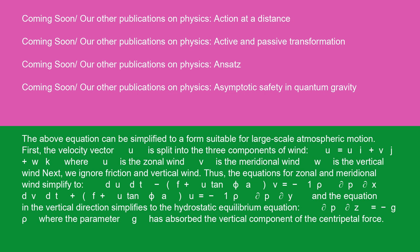Thus, the equations for zonal and meridional wind simplify to: du/dt - (f + u tan φ/a)v = -1/ρ ∂p/∂x, dv/dt + (f + u tan φ/a)u = -1/ρ ∂p/∂y, and the equation in the vertical direction simplifies to the hydrostatic equilibrium equation: ∂p/∂z = -gρ, where the parameter g has absorbed the vertical component of the centripetal force.